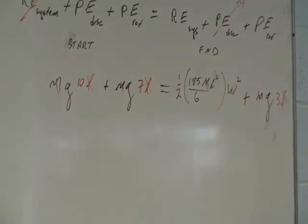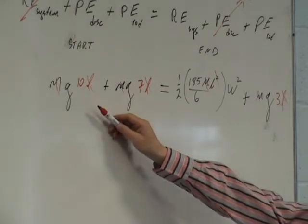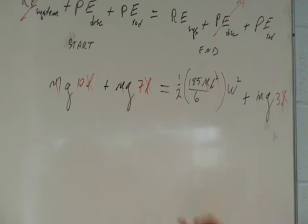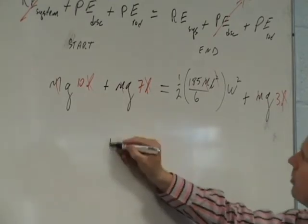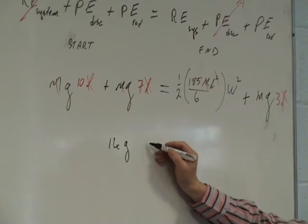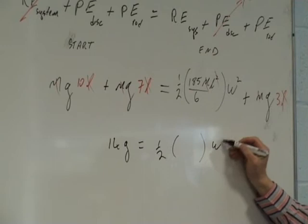You can bring 14G on the left. 10 and 7 is 17 minus 3, that is 14. In fact that's going to be 14G is equal to a half of all of that by omega squared.